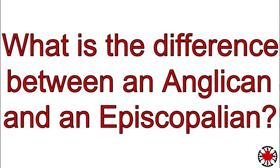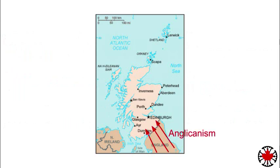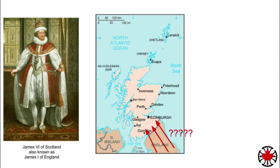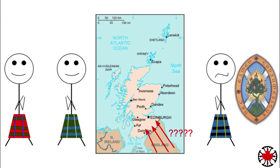It all starts in the 17th century in Scotland. The Anglicanism found in England had been introduced there when the Kings of Scotland had also become the Kings of England. However, in the 17th century, Anglicanism wasn't called Anglicanism yet, at least not in English. Eventually, these Scottish Anglicans needed a way to contrast themselves from their fellow Scottish Protestants, whose church was governed by elders and as such were called Presbyterians.